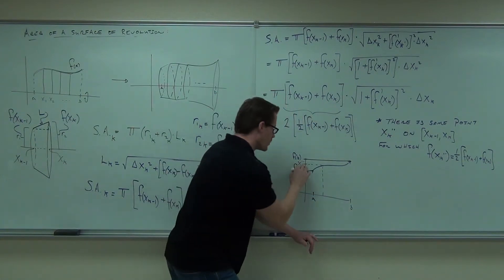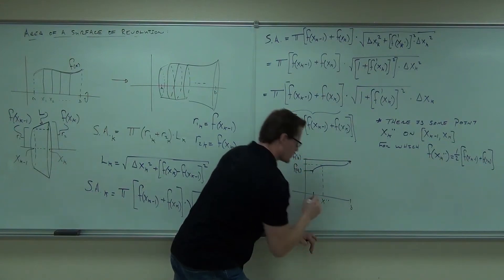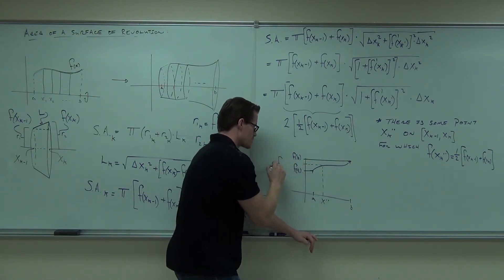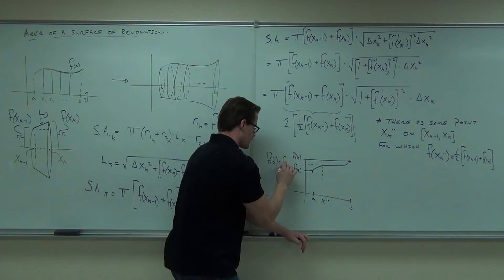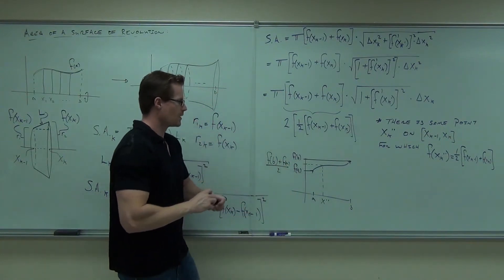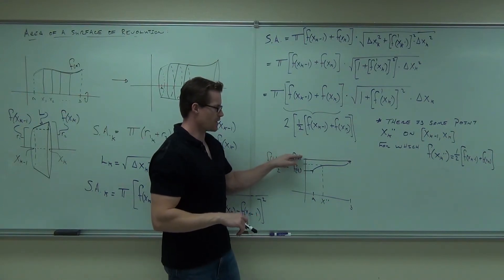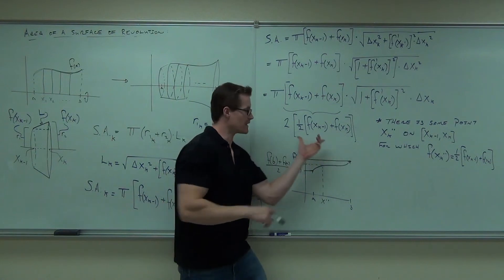It says, there's going to be some point, x sub dot dot, for which you can find the average. Look what we've done. We've taken the average of f of a and f of b. That's the height right in the middle of it. That's actually exactly what this is right here. That's the average height.